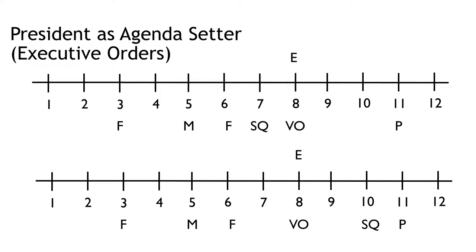In these examples, the pivotal players are all the same, and what differs is the status quo is in a different place. In both cases, the executive order should move the policy to 0.8. Pause the video to think about why that would be the case. Think about the logic in both situations.